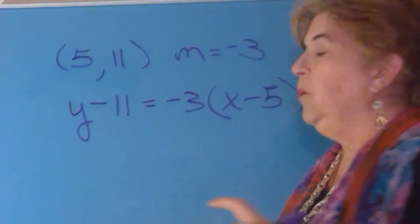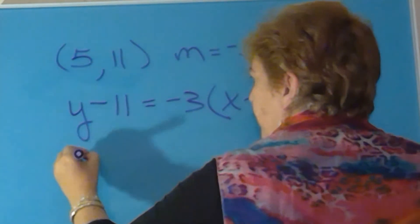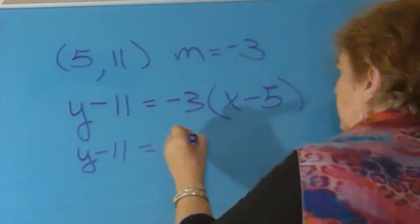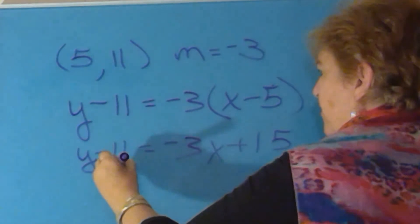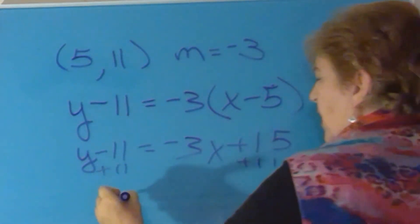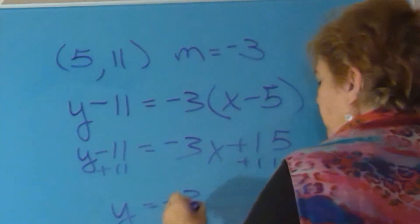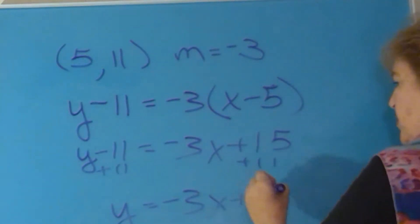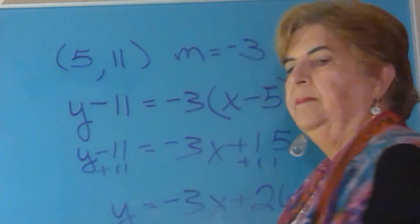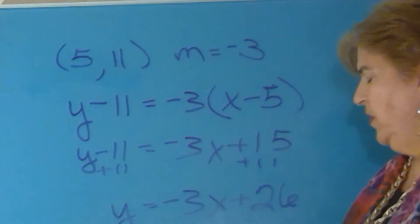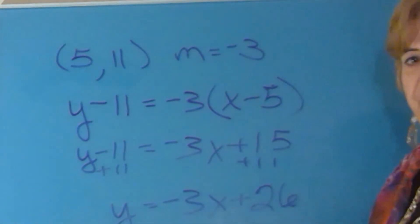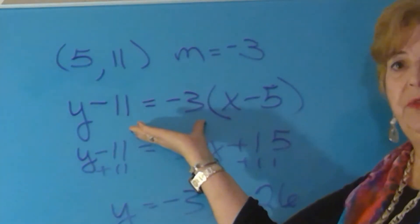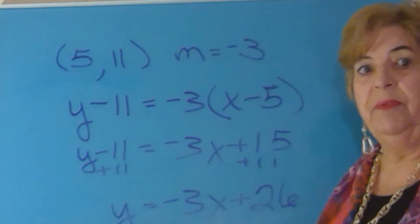To put that into slope intercept form, distribute the 3 and then add 11 to both sides, and you get y equals negative 3x plus 26. And that is the answer to that problem. You could have done it by finding b first and then putting it in slope intercept form. But I think it's easier just to start with an equation and then simplify the equation.